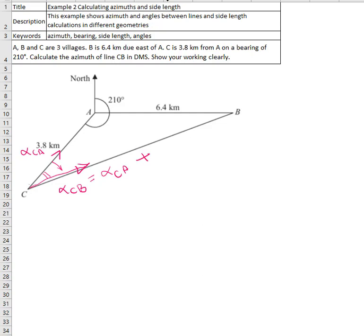Alpha CB equals alpha CA plus the unknown angle. If we find the angle that is unknown at C, then we can find alpha CB.